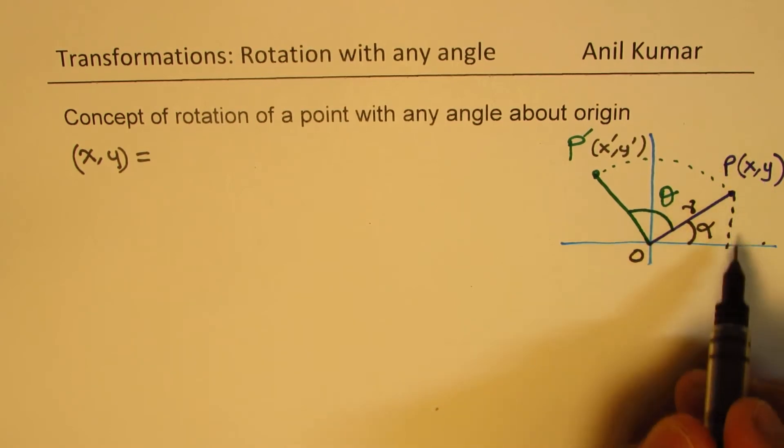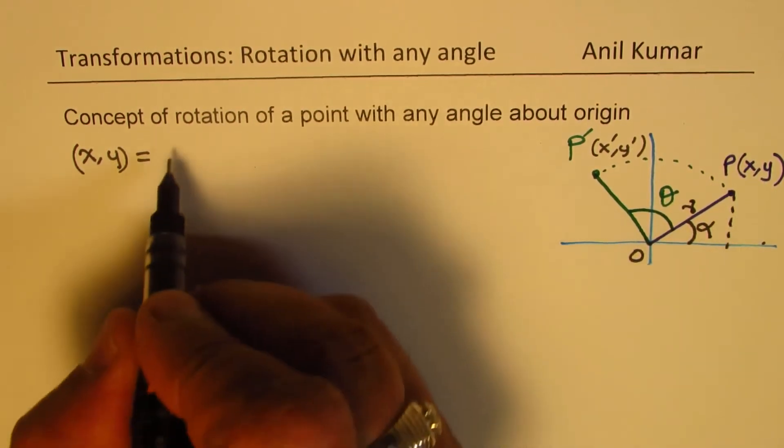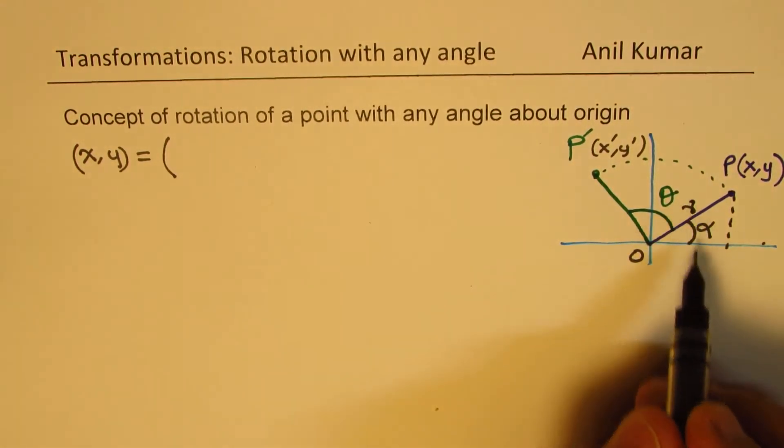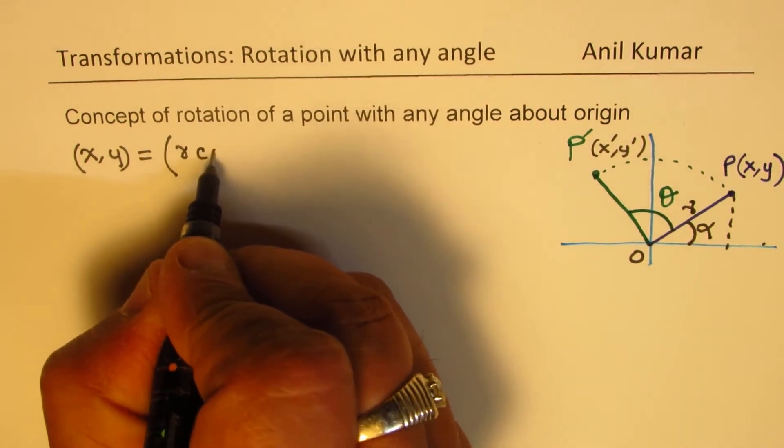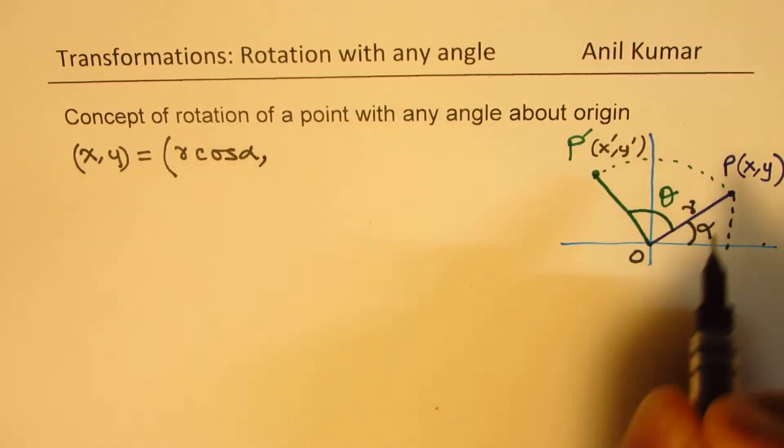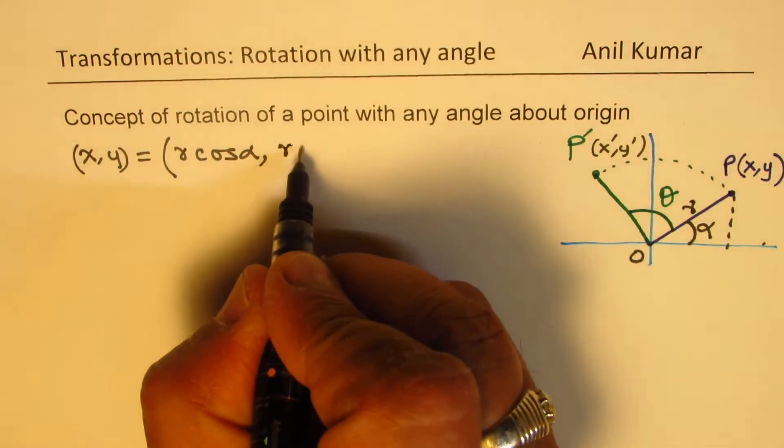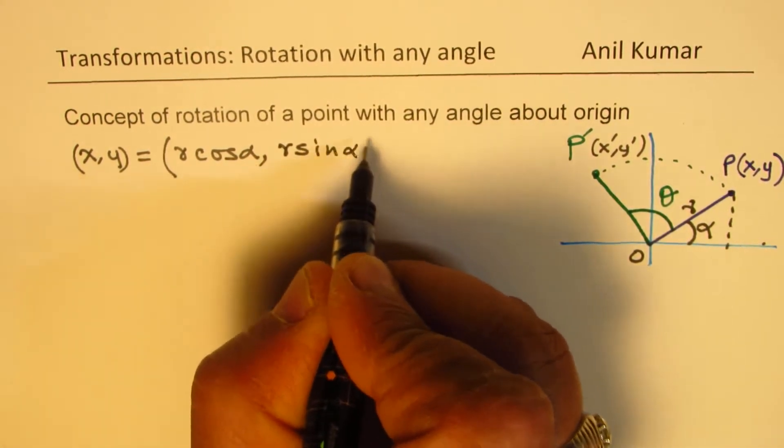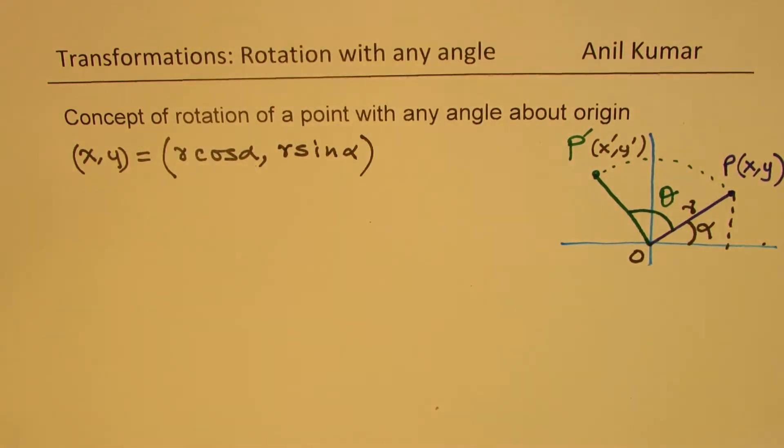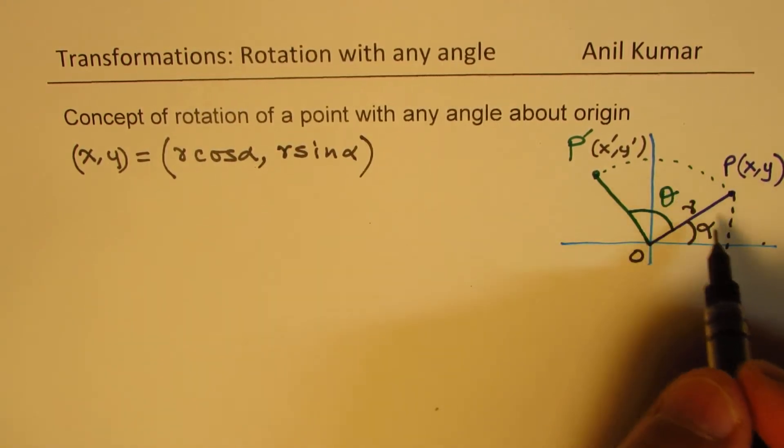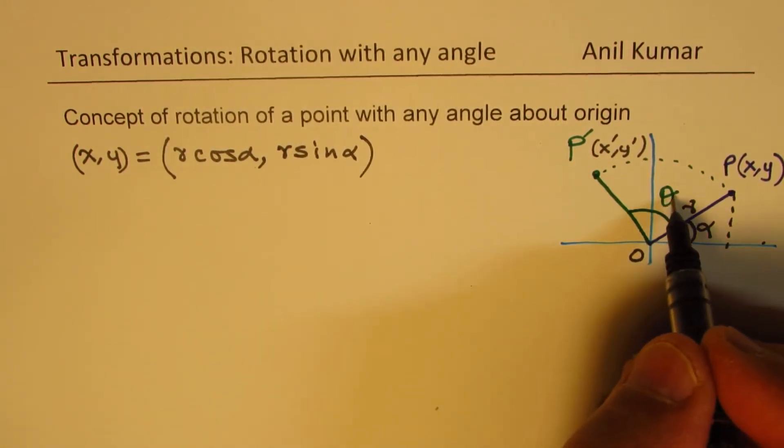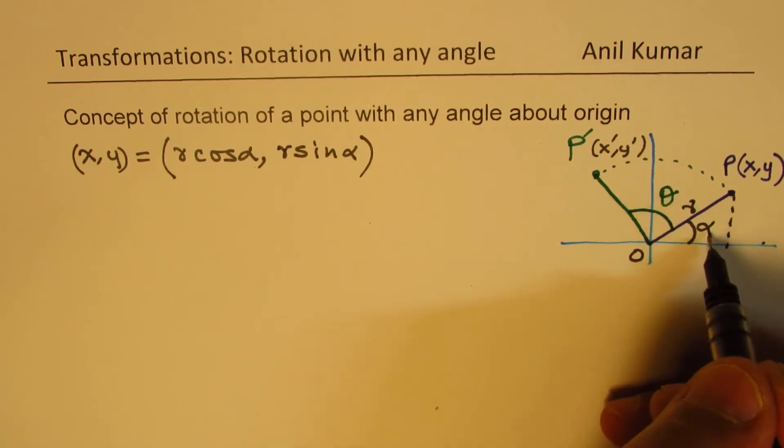In that case, the value of x will be equal to r cos alpha, and the value of y will be r sin alpha. So we could write it in polar coordinates. So that really helps. Now the idea is that we need to do a rotation of theta. That means you add theta to alpha.